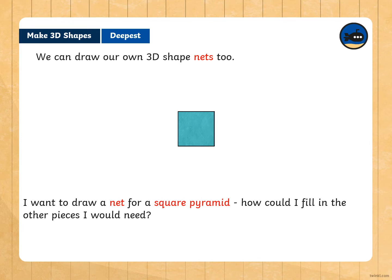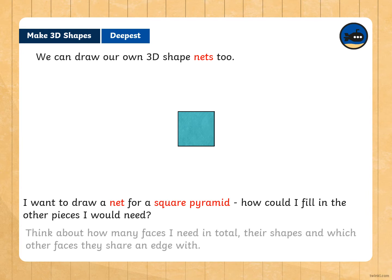We can also draw our own 3D shape nets too. I want to draw a net for a square pyramid. How could I fill in the other pieces I would need? From the square base, all we need to do here is to think about how many faces you need in total, their shapes, and which other faces they share an edge with. We have 4 triangles.